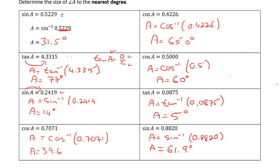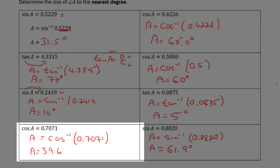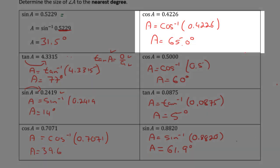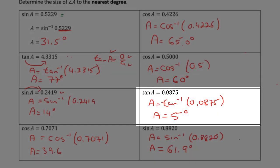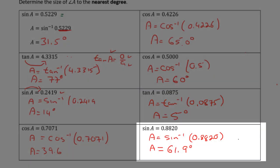All right, how did you do? Cosine of angle A when it equals 0.7071, angle A is 39.6 degrees. Cosine of angle A when the ratio is 0.4226, angle A is 65 degrees. When cosine of A equals 0.5, A is 60 degrees. When we have a tangent of 0.0875, angle A is 5 degrees. And when we have sine of angle A equaling 0.8820, angle A is 61.9 degrees.